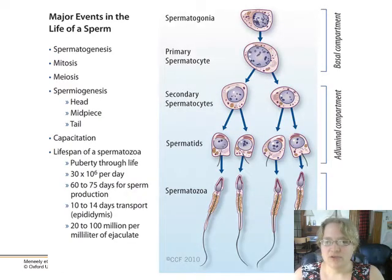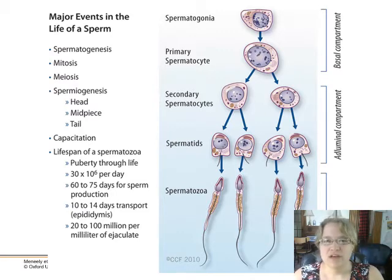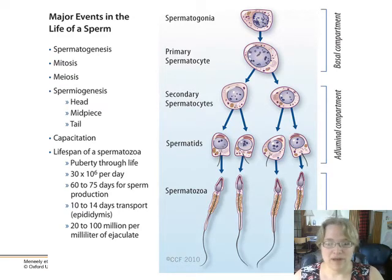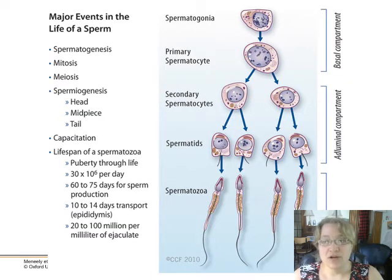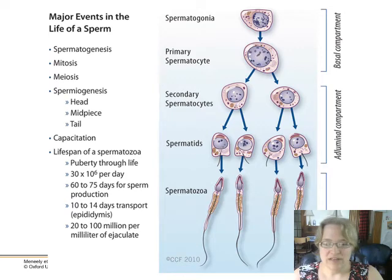Meiosis for sperm formation is pretty straightforward. You have your sperm precursor cells that undergo mitosis until there's enough of them, and then they start undergoing meiosis. The secondary spermatocytes become the spermatids, which when fully developed become the spermatozoa. For each precursor cell you get four gametes formed, each pretty much equal in DNA and structure.